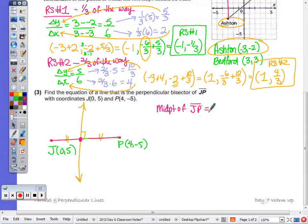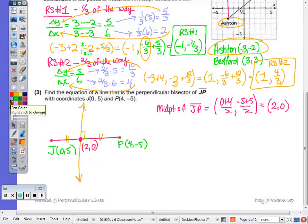So average the x's, average the y's, so 0 plus 4 over 2, and negative 5 plus 5 over 2, to give me a midpoint of 2, 0. So I have a point on this orange line. Now, in order to write the equation, which we use y minus y1 equals m times x minus x1, I have a point, now I need to find the slope.